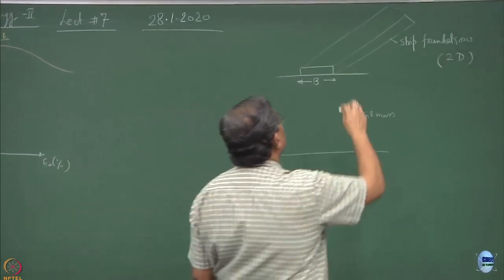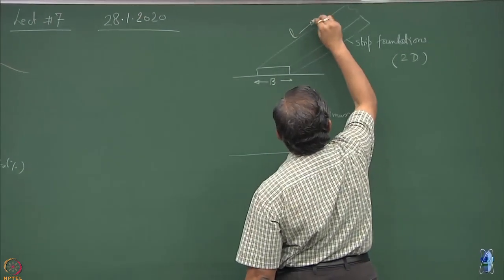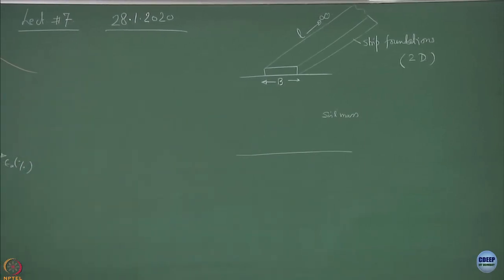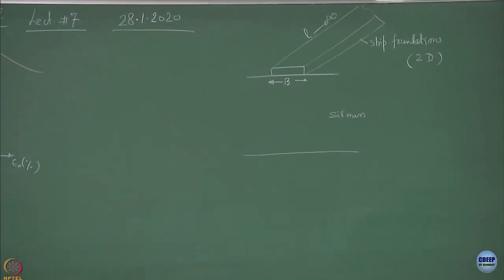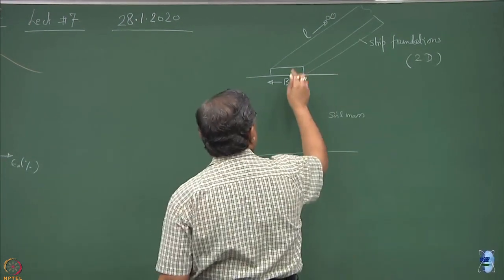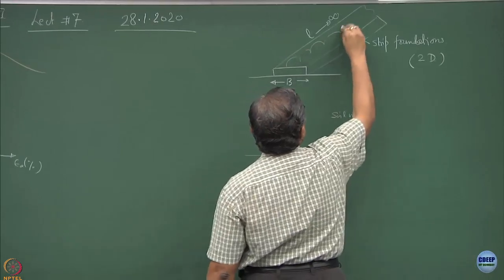On the granular system, consolidation settlement is not going to prevail. Immediate settlements will prevail. We have to only define the term b, the width of the foundation system. We call this as l, which tends to infinity. This is the width of the foundation, and this foundation is taking load q.